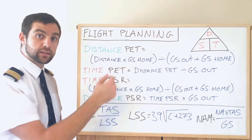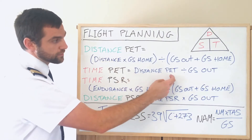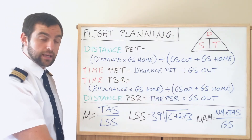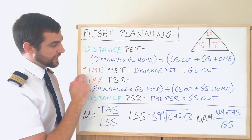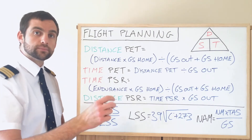For distance to the point of equal time, we've calculated the distance previously, so we pop that into the formula and divide it by the speed out — and we get the time to that midpoint.